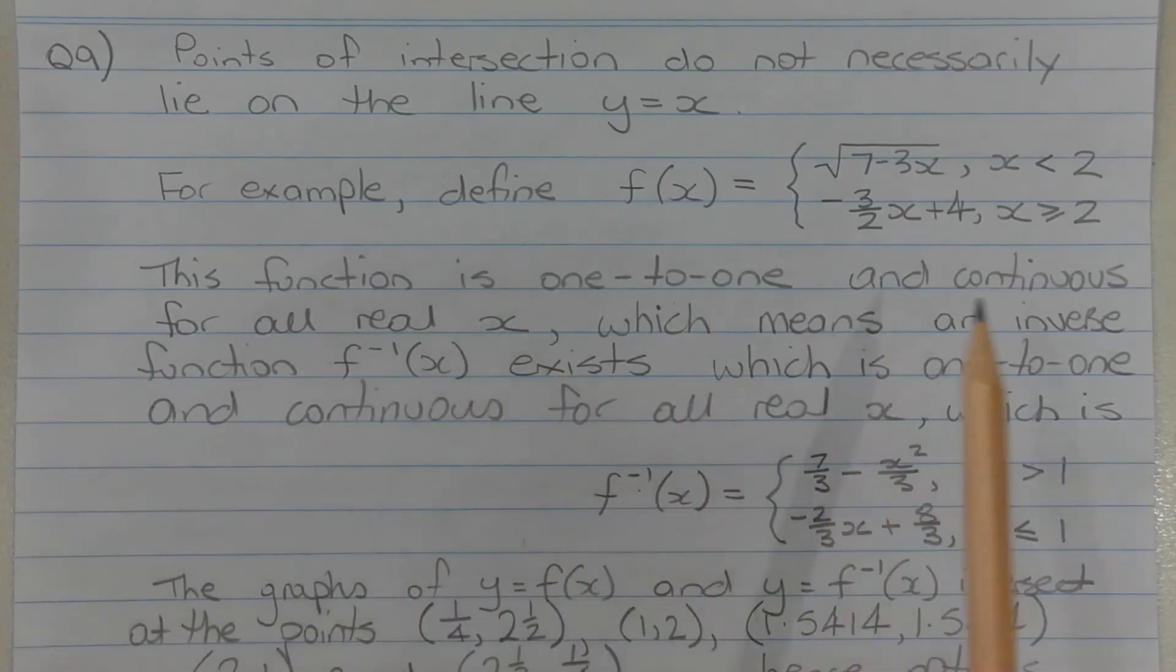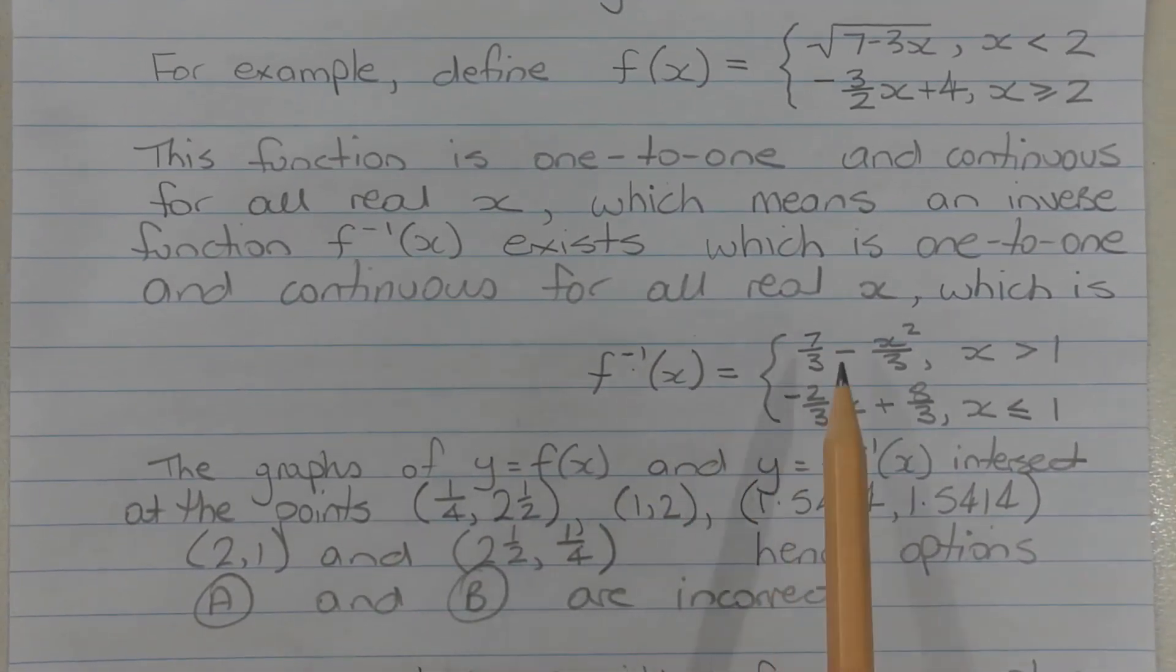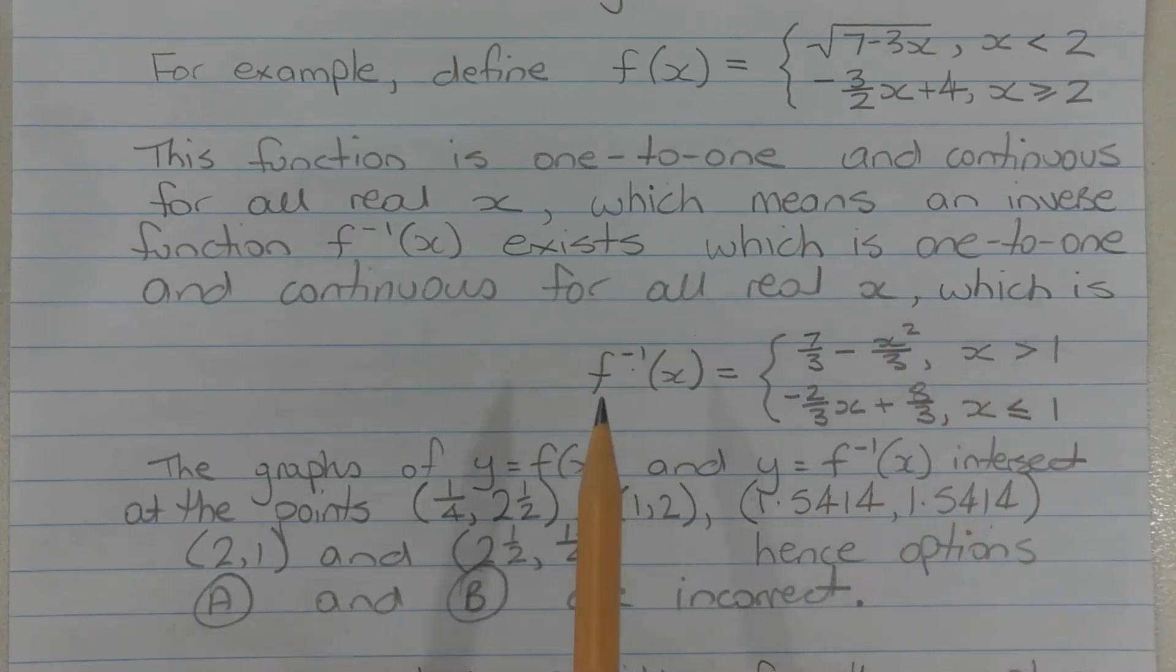This function is one-to-one and continuous for all real x, which means an inverse function f^(-1)(x) exists which is one-to-one and continuous for all real x. The inverse is f^(-1)(x) = 7/3 minus x²/3 for x greater than 1, and f^(-1)(x) equals negative 2/3 times x plus 8/3 for x less than or equal to 1.